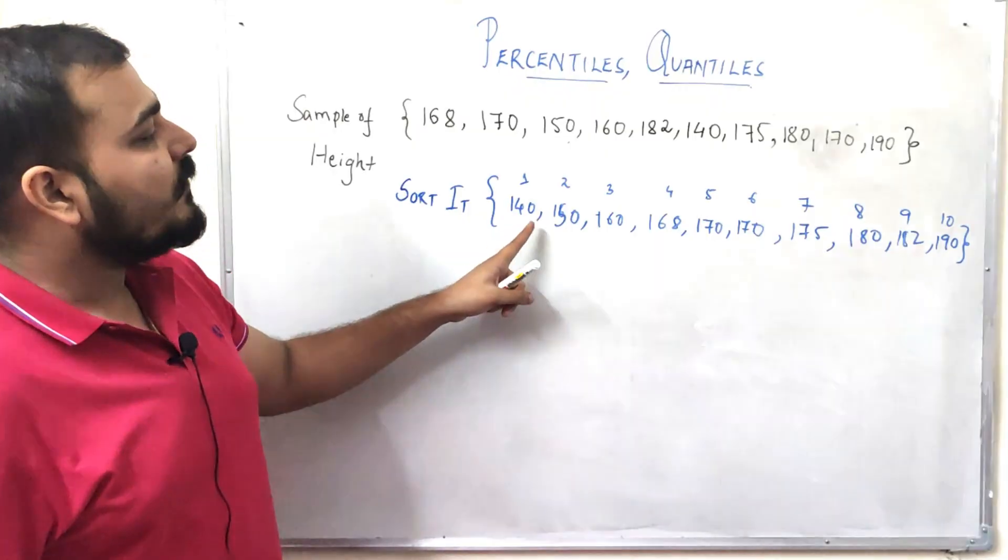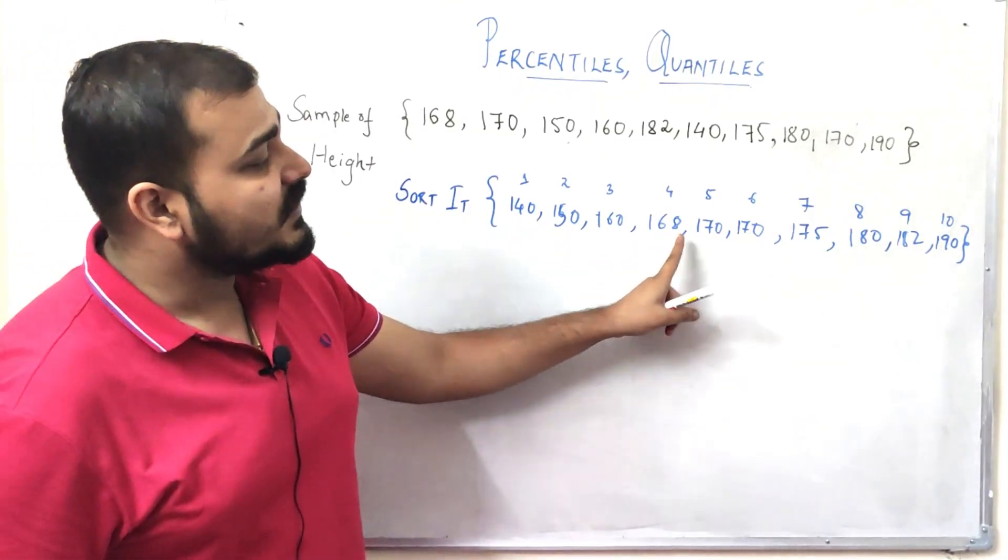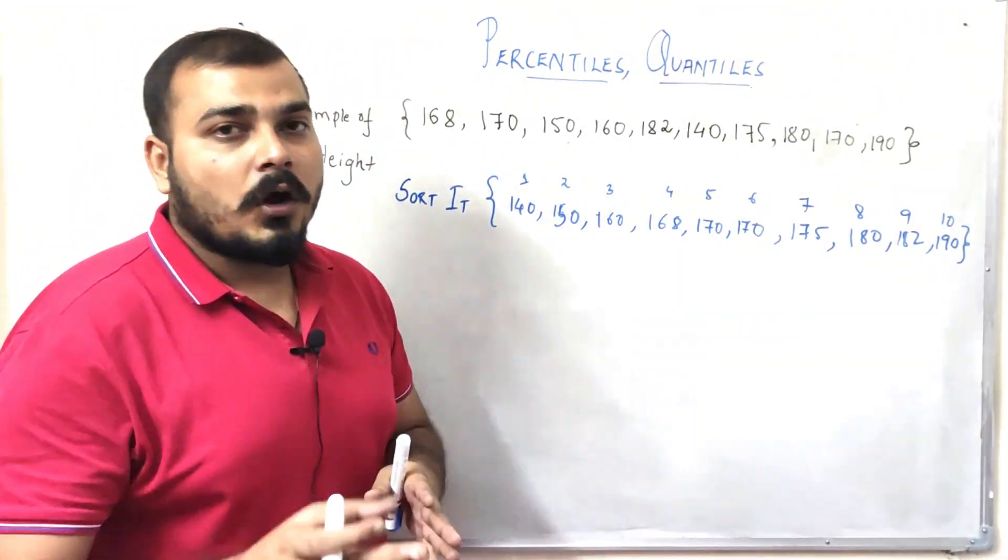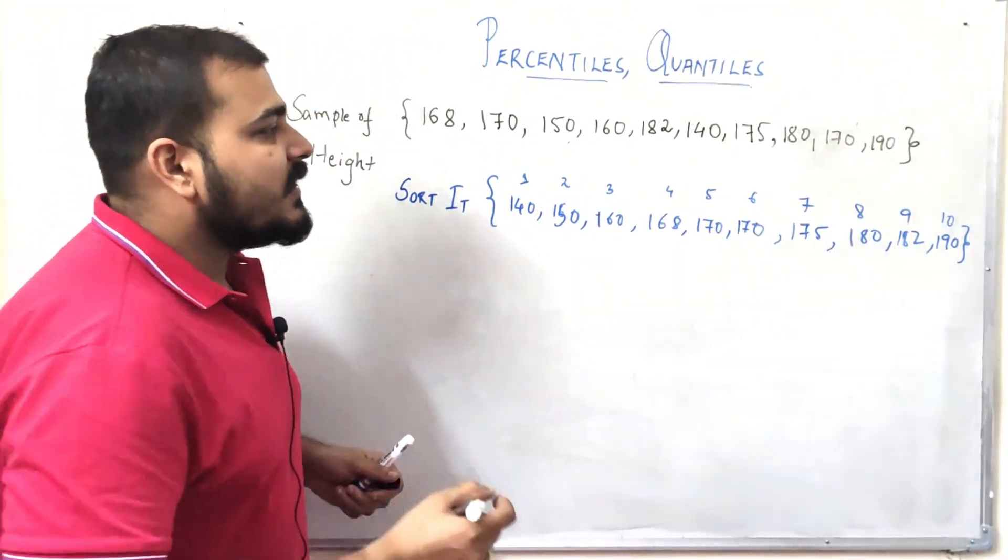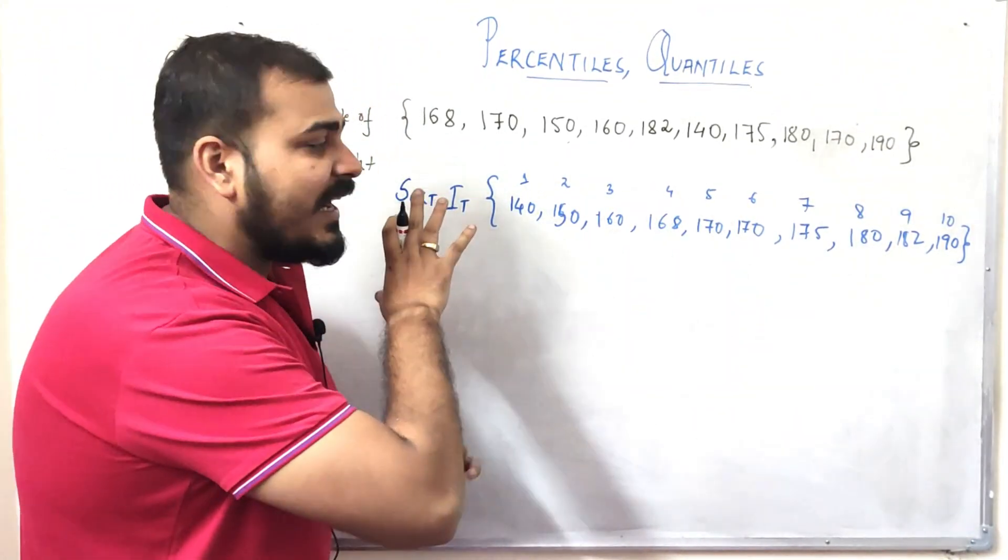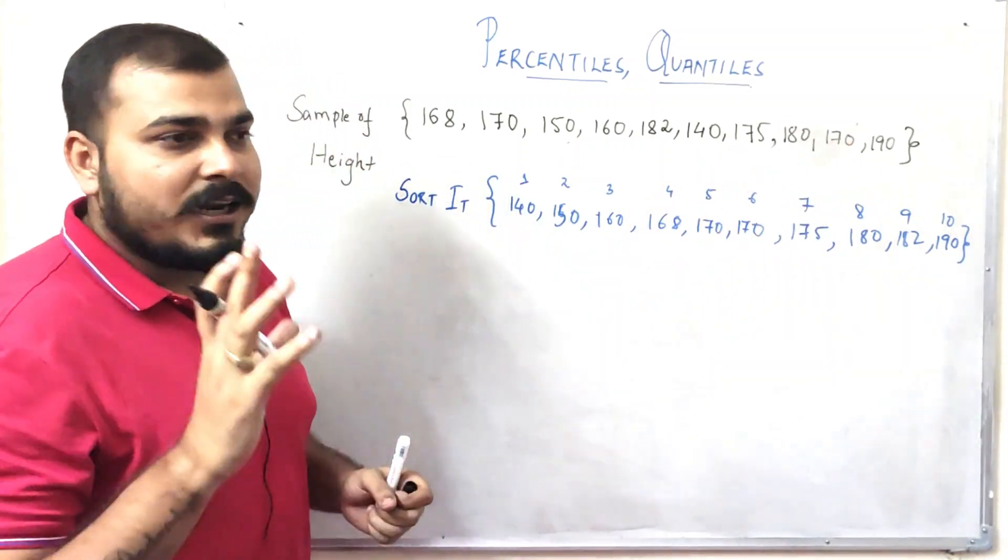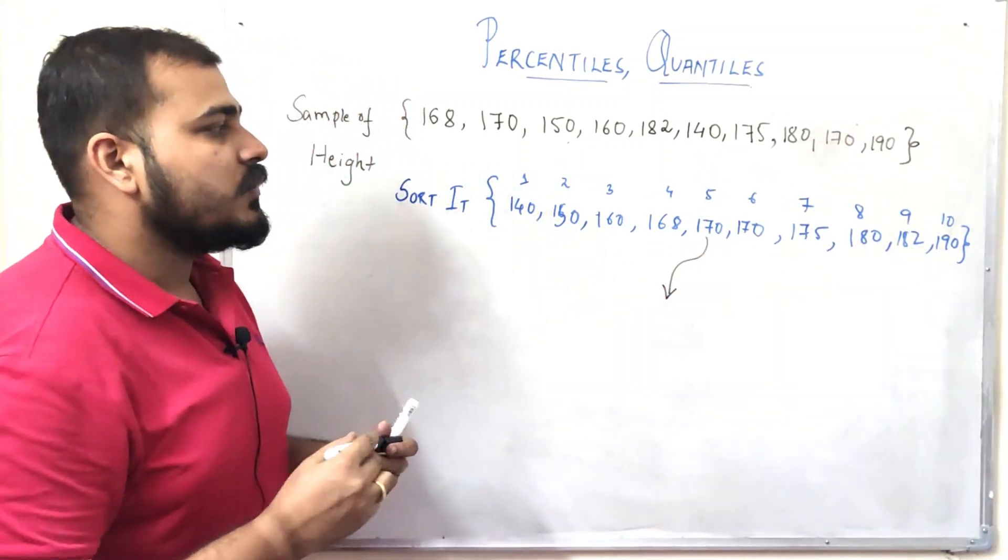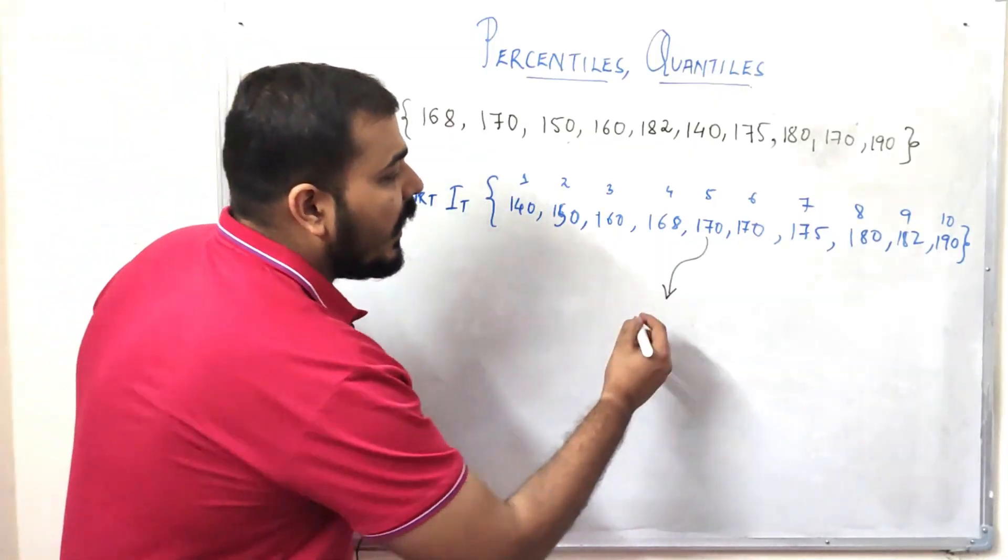You can see 140, 150, 160, 168, 170, 170, 175, 180, 182, and 190. Now after sorting, let me consider the fifth number. You can see that I have 10 numbers total, right? If I take this fifth number, which is my 170 value, I can basically call this the 50th percentile.